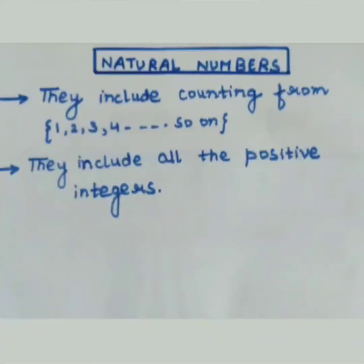Moving further — what are natural numbers? They include counting from 1 onwards. In whole numbers we include from 0 onwards, whereas in natural numbers we start from 1 onwards and so on. They are indefinite.